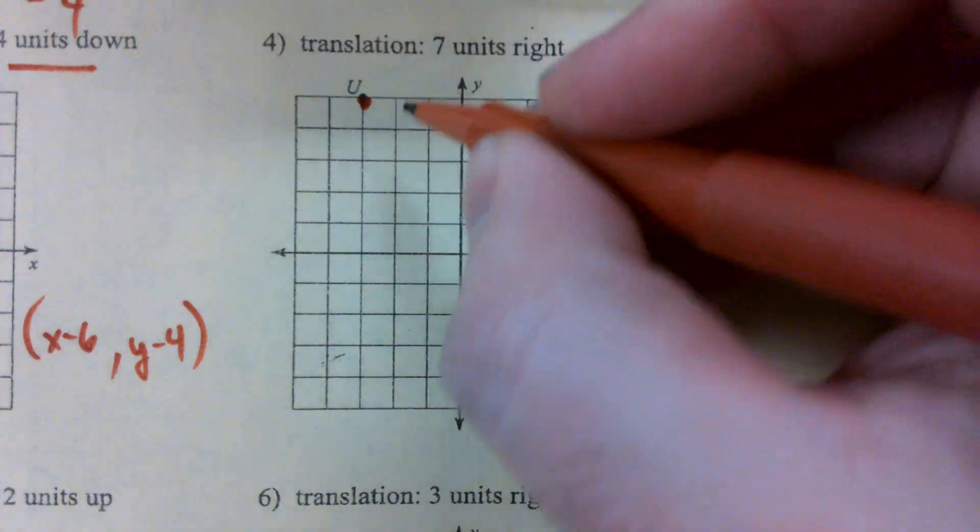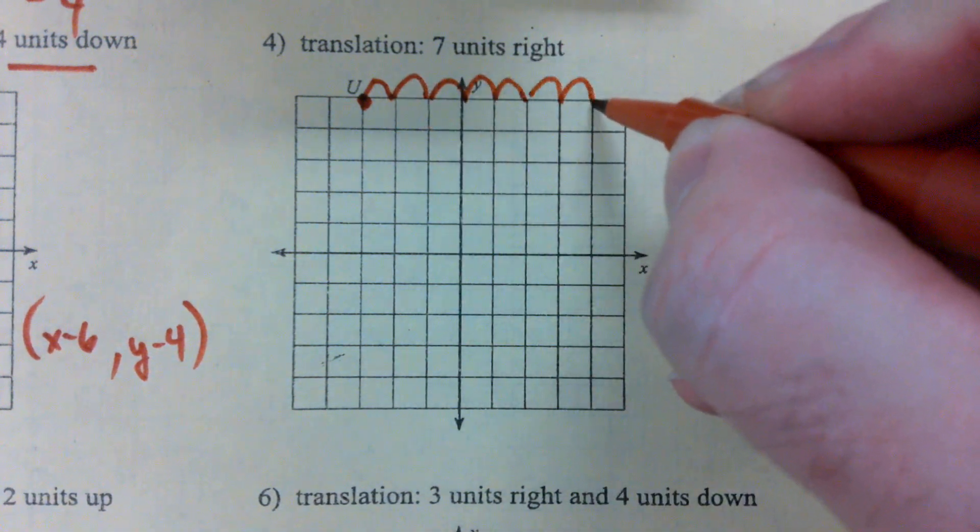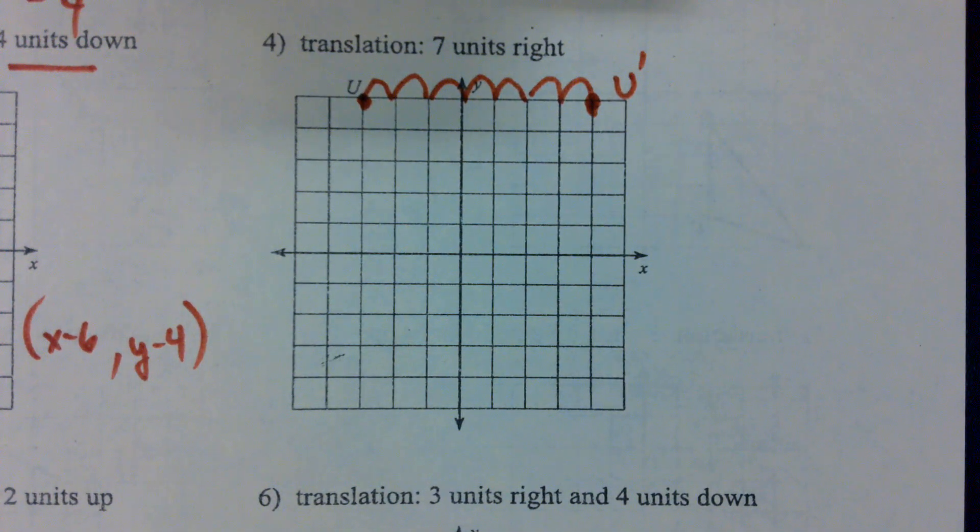Let's count out 7 to the right. Alright, 1, 2, 3, 4, 5, 6, 7, make my new point, call that U prime.